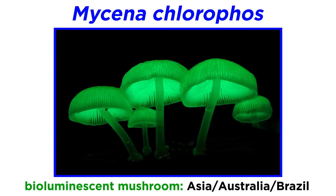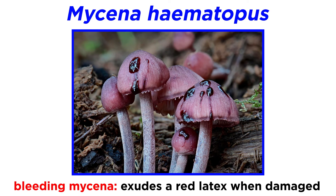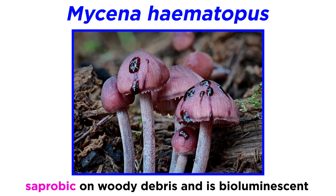Mycena chlorophos is a bioluminescent species that glows greenish white at night. The mushroom has been documented in Asia, Australia, and Brazil. Mycena haematopus, or the bleeding mycena, is a maroon-colored mushroom that exudes a red fluid called latex when the mushroom is damaged, hence the name bleeding mycena. This mushroom is saprobic and grows in clusters on woody debris along the forest floor. Both the mycelium and fruiting bodies have been reported to be bioluminescent.